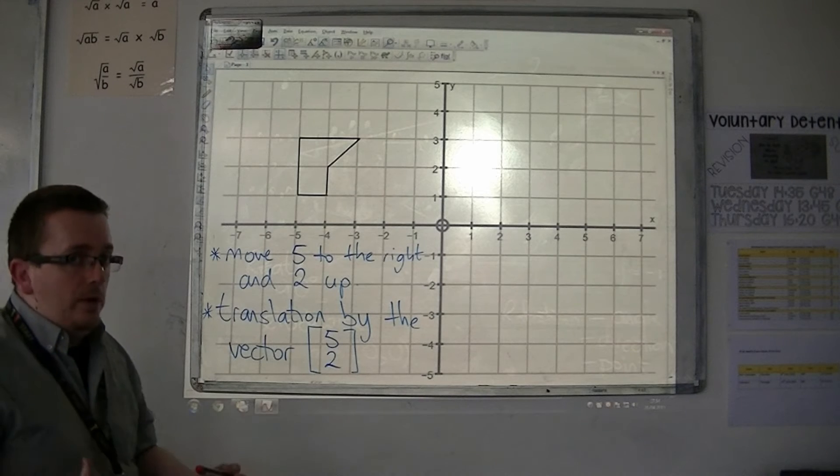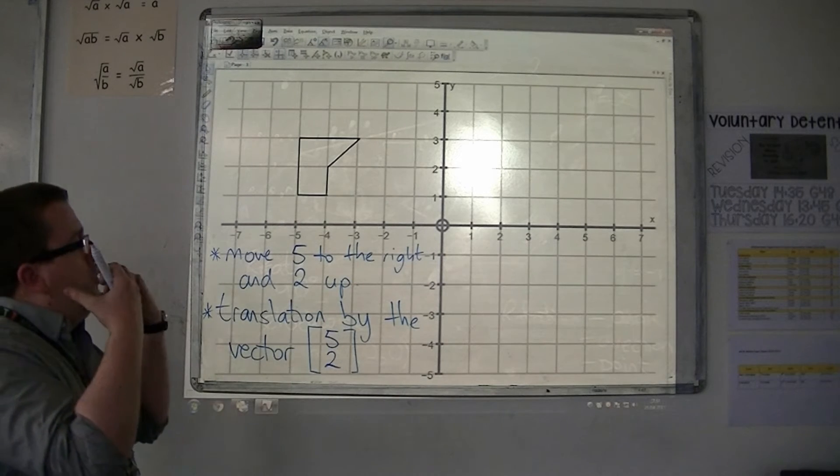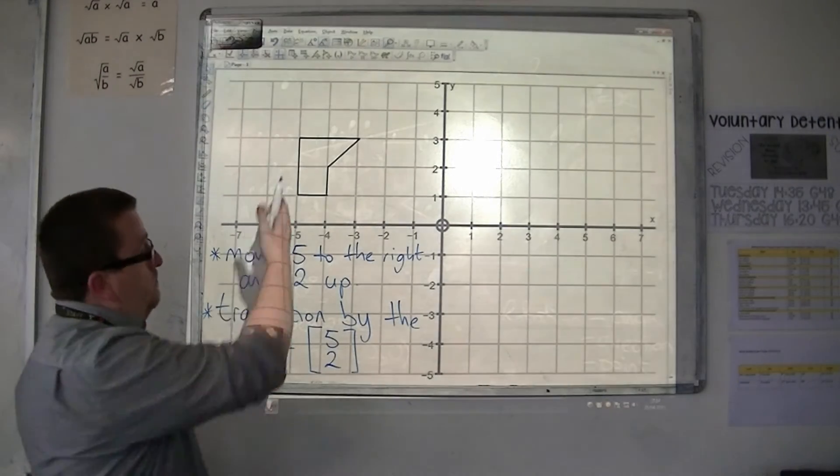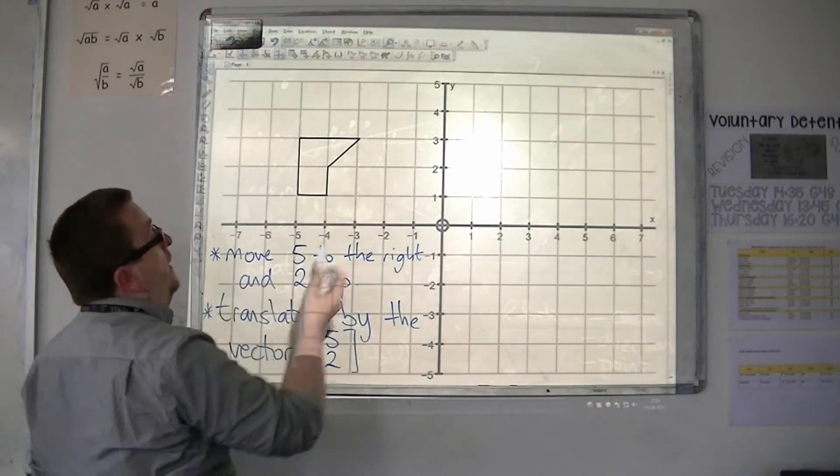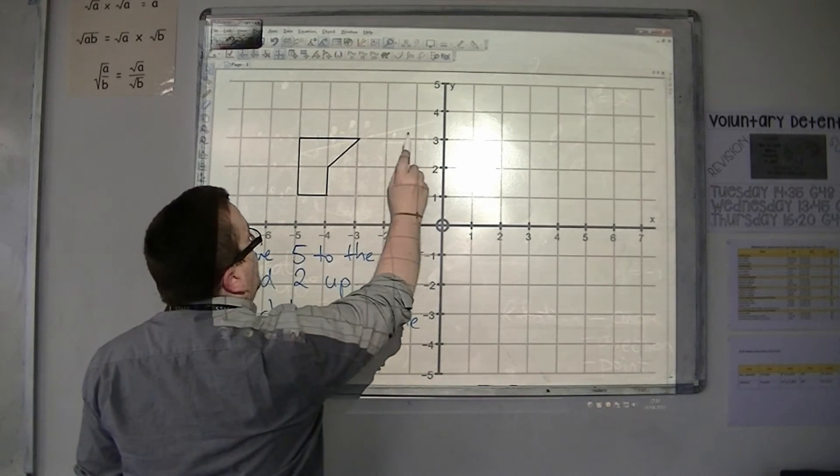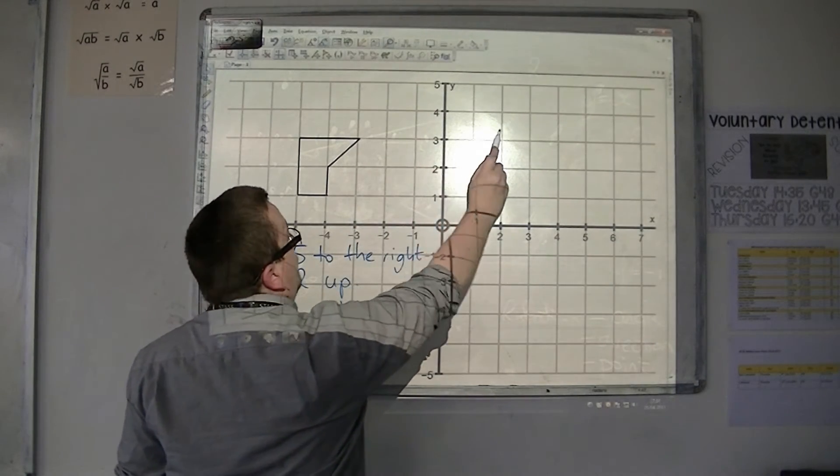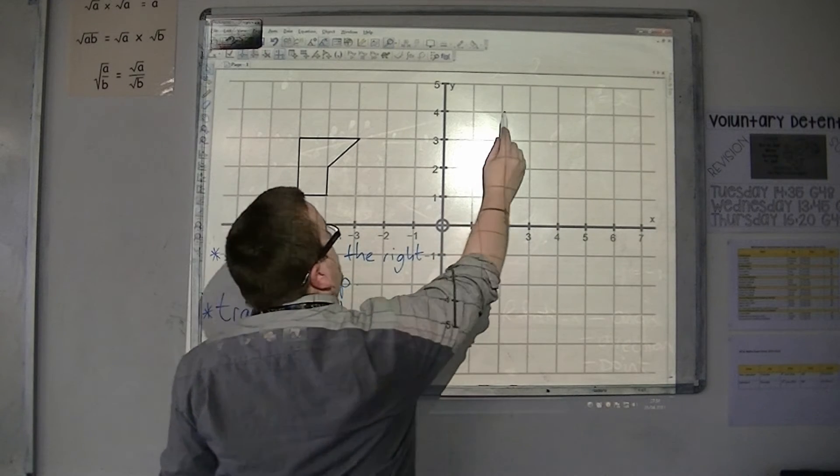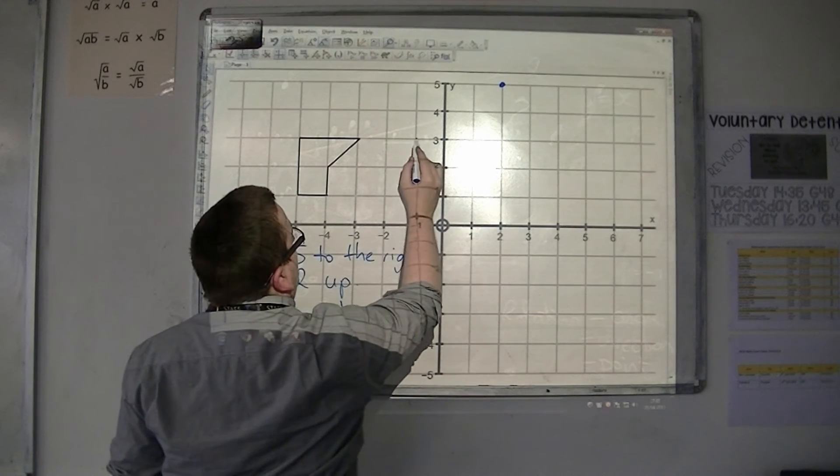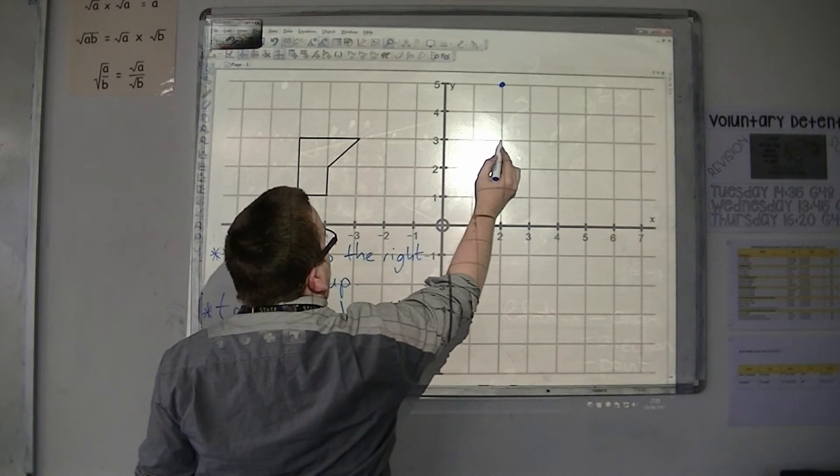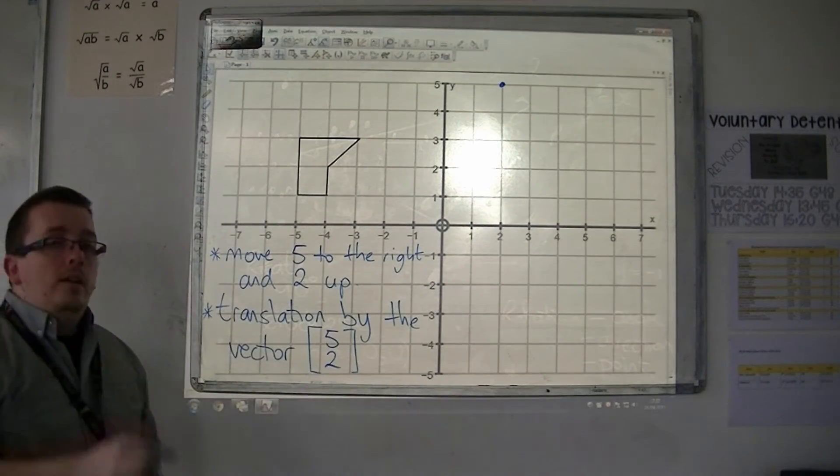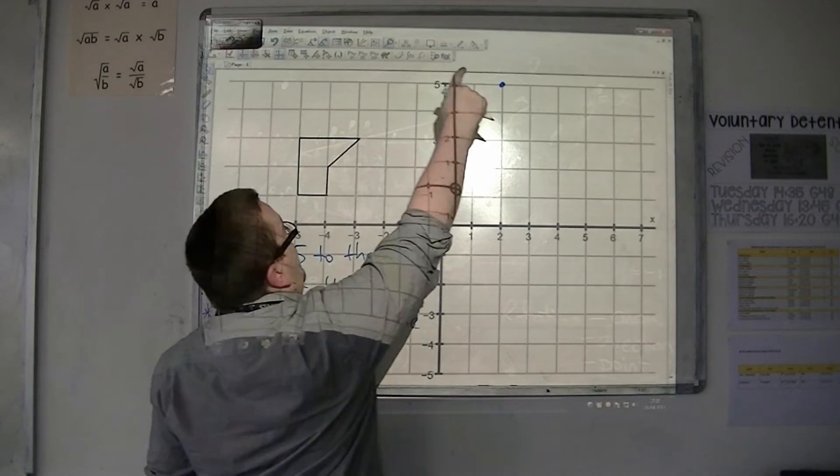So how do we actually do it? Choose a corner, so choose one of the points on the original shape. I'm going to choose that point there, and I'm going to move it. One, two, three, four, five to the right, and one, two up. So just count the squares to the right, five to the right, and then two up. That point is now up there.